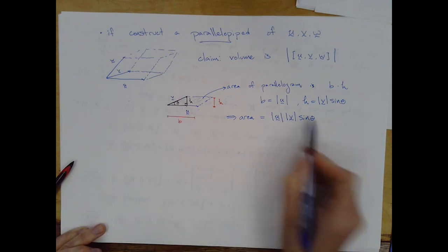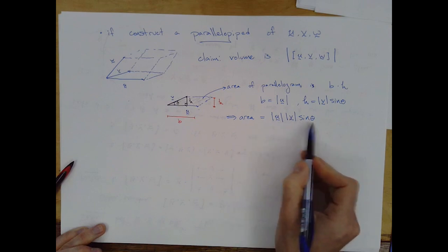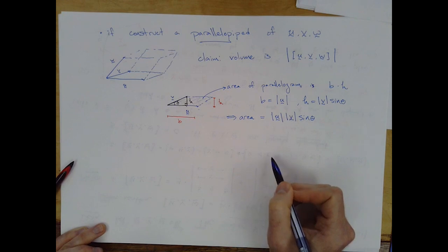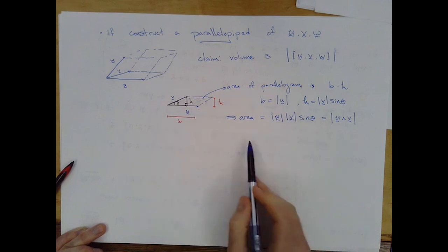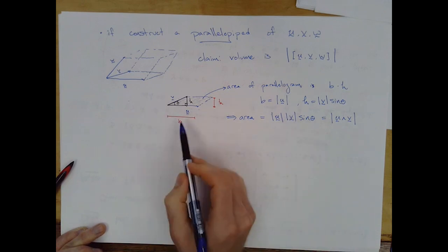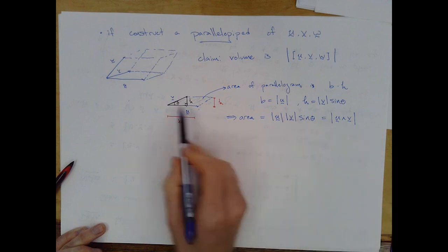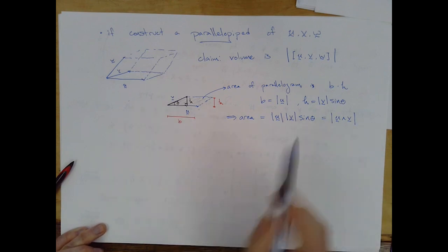And this formula, magnitude u, magnitude v, sine of the angle between u and v, is what we derived in the other video as the magnitude of the cross product, u cross v. So in fact, this is a sort of interesting result on its own. Just thinking about two vectors and the cross product, the magnitude of that cross product tells you the area of the parallelogram constructed by those two vectors.